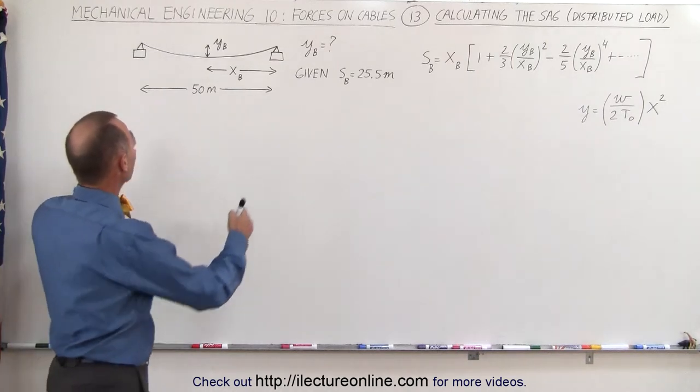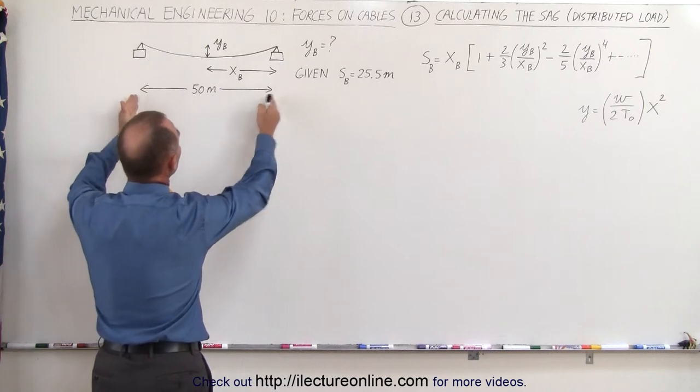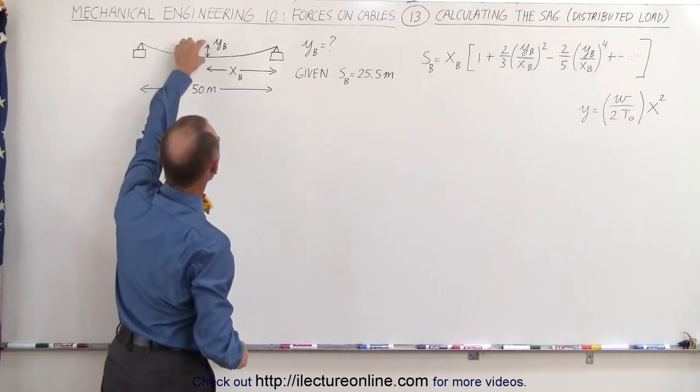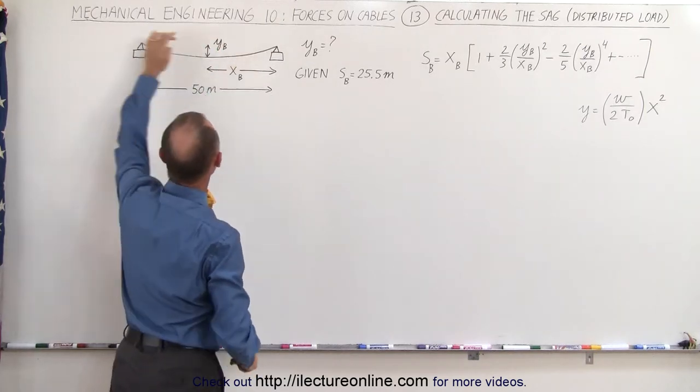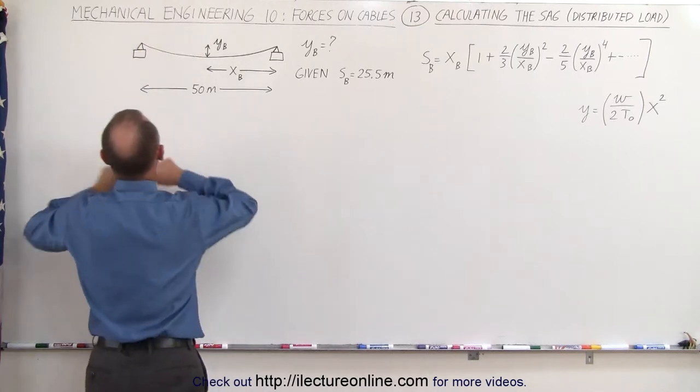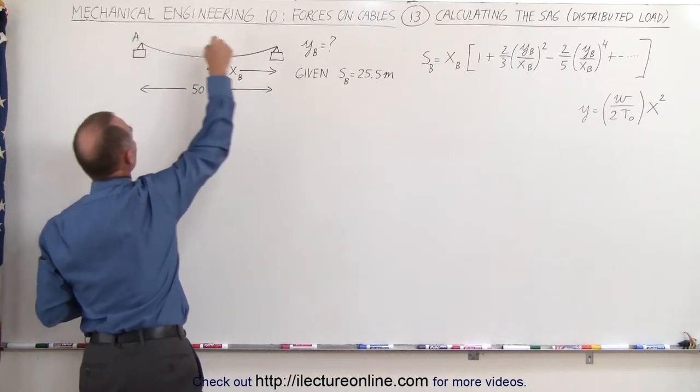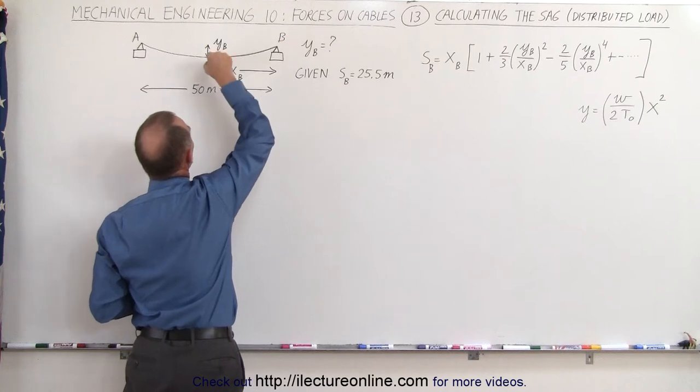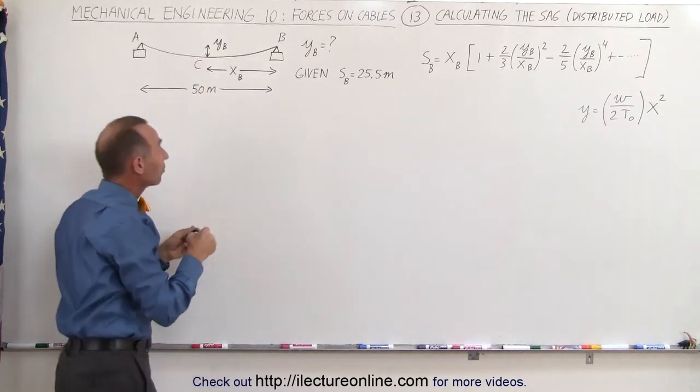So here, let's assume that the horizontal distance is 50 meters. We're trying to find out what Y sub B is, the sag from where the attached points are, A and B. So usually this is called A, this is called B, and then the lowest point of the cable is called C.